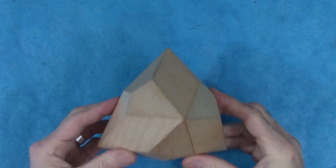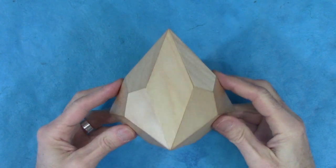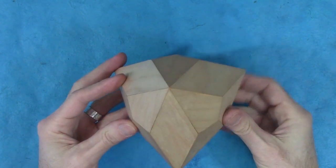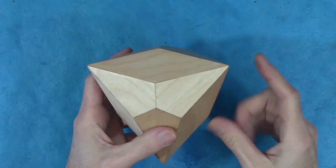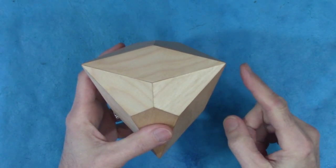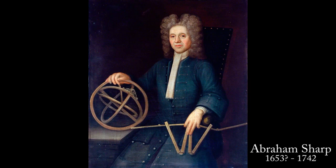I'm going to show you a wonderful little polyhedron. I call it the Sharpo-hedron. That's not because the points are sharp. They're not. It's named after Abraham Sharpe, who invented it in the late 1600s.